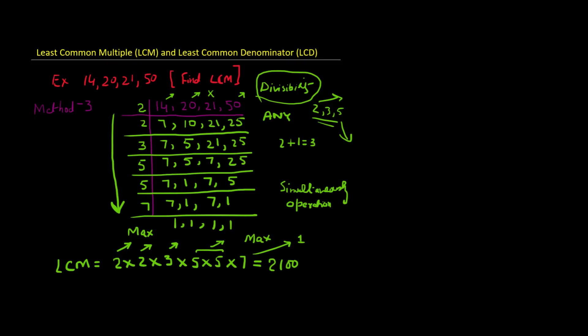So these are the 3 methods of finding LCM or LCD. LCD is just LCM when these numbers occur in the denominator of fractions. So we use the same method. I hope this makes sense — this is enough for LCM and LCD.